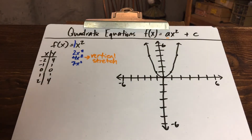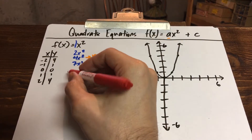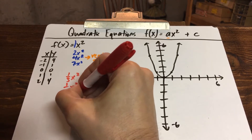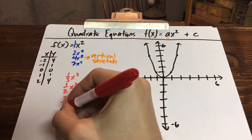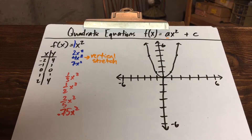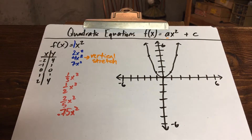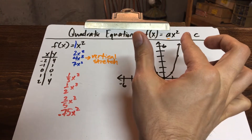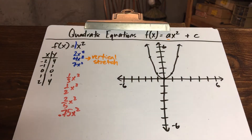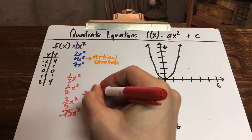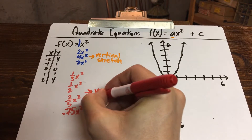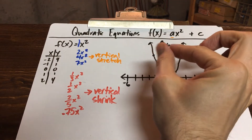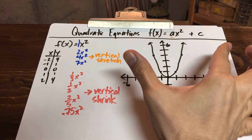Whenever the letter a is less than 1 — for example, a number between 0 and 1 like one-third x squared, one-half x squared, two-fifths x squared, or a decimal like 0.75 x squared — having a fraction or decimal between 0 and 1 is going to make your graph more wide, opening up the two sides even wider. This is called a vertical shrink, because we shrink that coefficient down to a number less than 1.